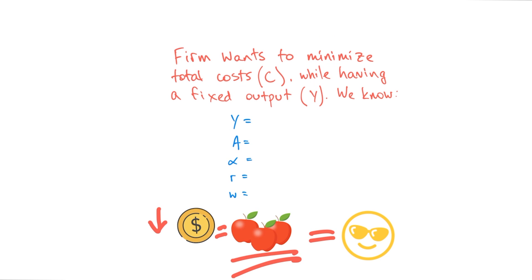It reads something like this: a firm wants to minimize total costs while having a fixed output. That means a company wants to make a certain number of widgets, but they want to spend as little money as possible. Let's set up our example. Let's say that output Y equals 4,000 widgets, productivity is 10, the capital share of production is one-third, rent is $100, and wages are $25.